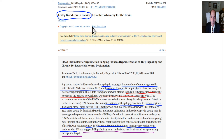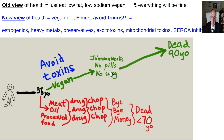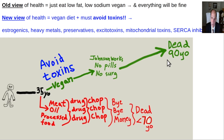Leaky blood-brain barrier causes all kinds of problems because toxic chemicals get in and you can't run your action potentials efficiently. The bottom line is: avoid these toxins, eat a healthy low-fat vegan diet, and you'll avoid pills and surgeries — probably living to about 90 or early 90s, everything else being equal.